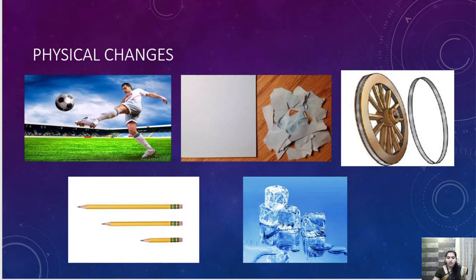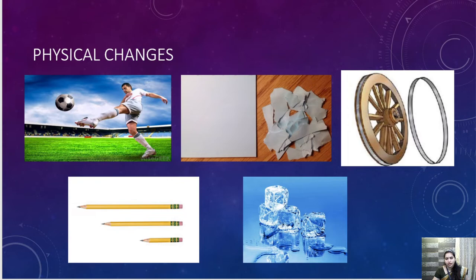Second example — tearing of paper. This is a sheet of paper and we have torn it into smaller pieces. Is the molecule of paper changing? Even after you have torn it into small parts, it is still paper. It will not convert to plastic or something else — it will remain as it is. The molecule or substance from which the paper is made will remain the same. So there is no new substance formed in tearing of paper, and it is a physical change.